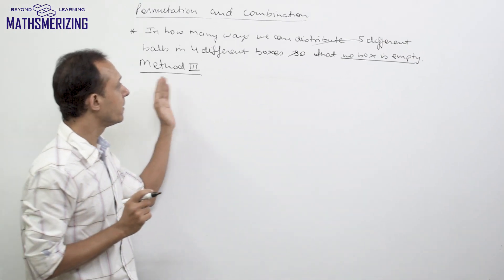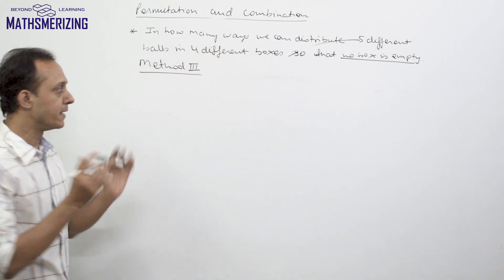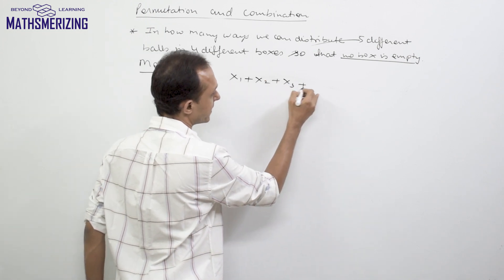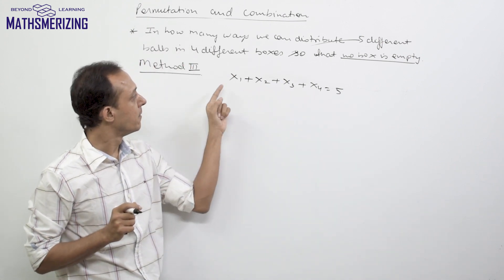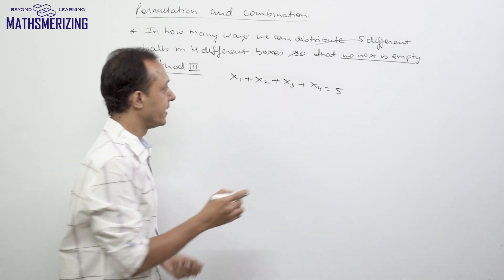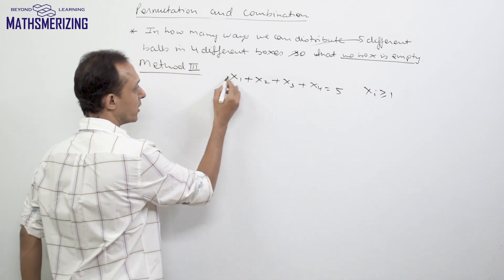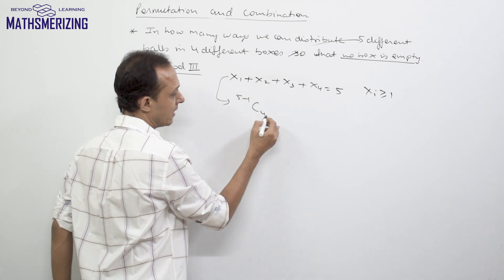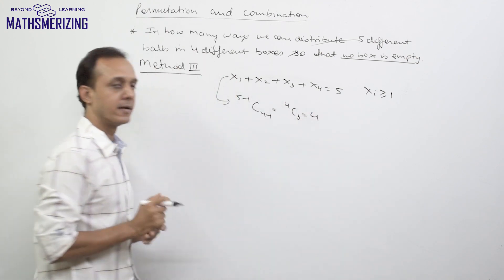Another way of solving the same question: first solve it assuming the balls are identical using the linear equation x1 + x2 + x3 + x4 = 5, where x1, x2, x3, and x4 represent the number of balls in boxes 1, 2, 3, and 4 respectively, and each xi ≥ 1. The number of ways to do this is (n−1)C(r−1) = 4C3 = 4.